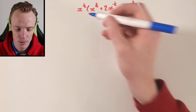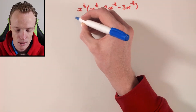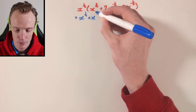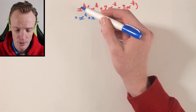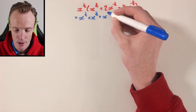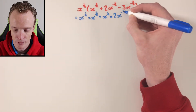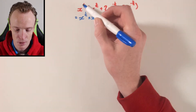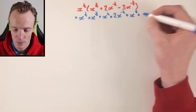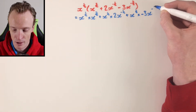So the very first thing I'll need to do is multiply x to the power of a half with x to the power of 3 over 2. This will then need to multiply with the second term, so that'll be adding x to the power of a half multiplied by 2x to the power of negative a half. And then I'll need to multiply the final term: x to the power of a half multiplied by negative 3x to the power of negative 3 over 2.